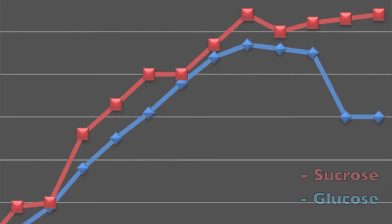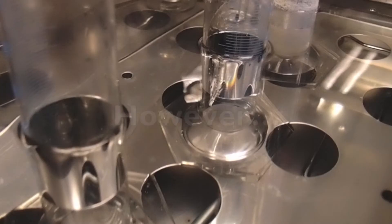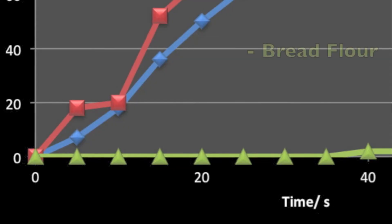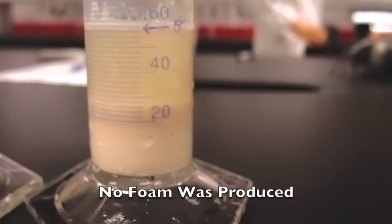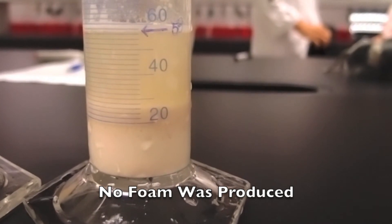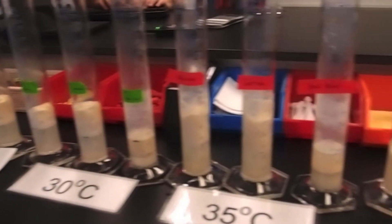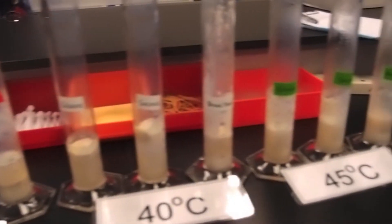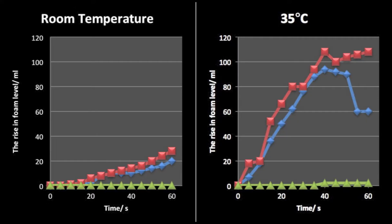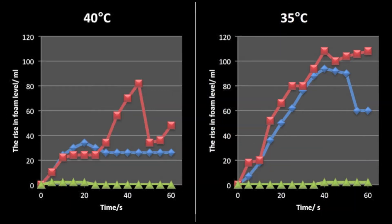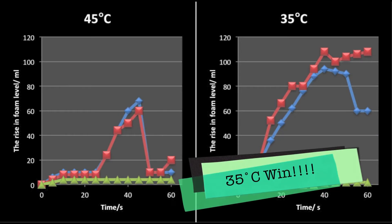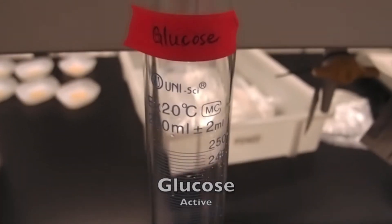Yeasts were active when they were put in glucose and sucrose at 35 degrees Celsius. However, the yeast remained inactive for almost 16 minutes in bread flour solution — more or less no foam was produced. What about their activity at different temperatures? Is the foam production the greatest at 35 degrees Celsius? Obviously, the yeast activity is the highest at 35 degrees given that they were in glucose or sucrose solution.